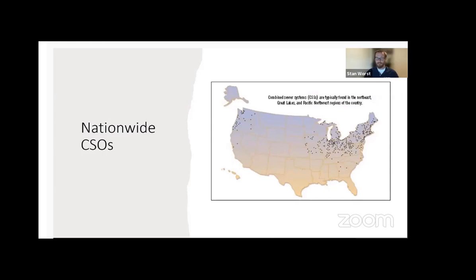There are a lot of CSOs around the country. The majority are in the Midwest and the Northeast — Boston, DC, all the cities around the Great Lakes: Chicago, Detroit, Cleveland — and some in the Pacific Northwest as well, like Seattle and Portland. A lot of these cities have combined sewer overflow systems in the process of getting changed. The federal EPA has mandated certain timelines for cities to fix their problem so that they don't have pollution or sanitation issues.